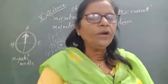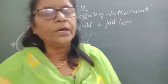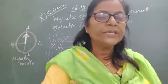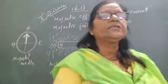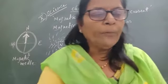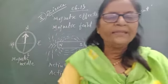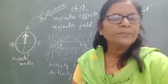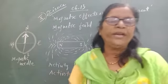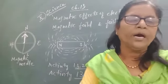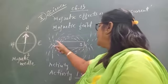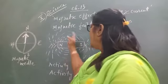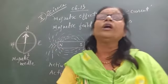First of all, fix a sheet of white paper on a drawing board using some adhesive material because otherwise it will move. Now place a bar magnet at the center and sprinkle some iron filings uniformly around the bar magnet. This N and S shows the two poles of bar magnet, and iron filings are spread around it.